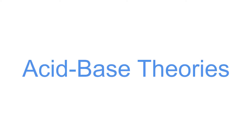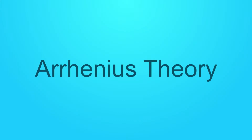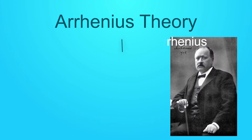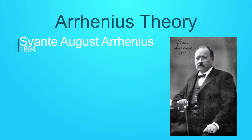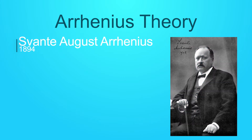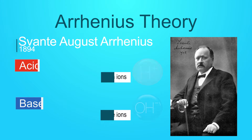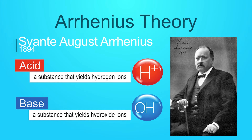There are some theories about acids and bases. In 1894, Svante August Arrhenius proposed that acids and bases may be defined in terms of the ions they form when dissolved in water. According to him, an acid is a substance that yields hydrogen ions, and a base is a substance that yields hydroxide ions.